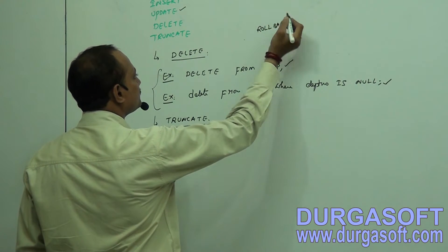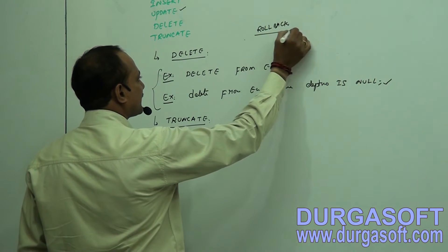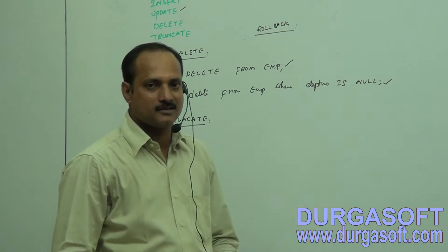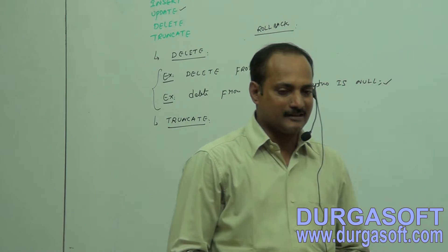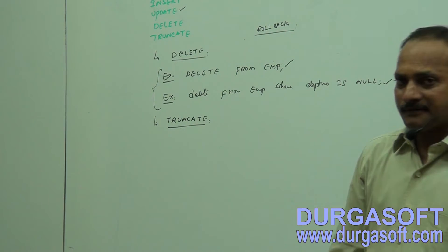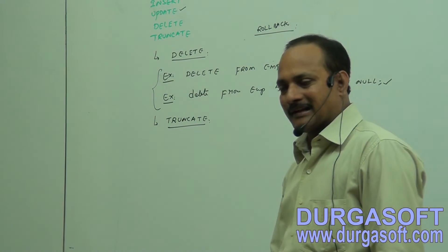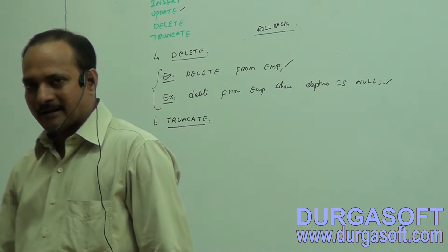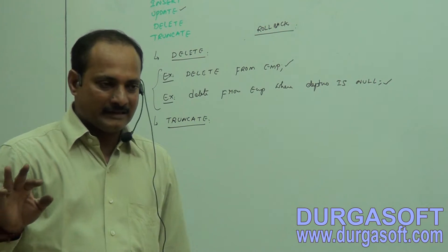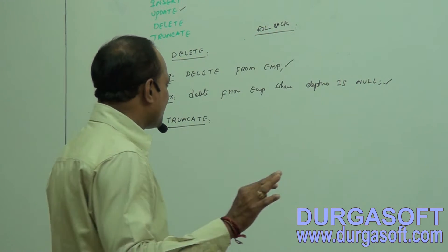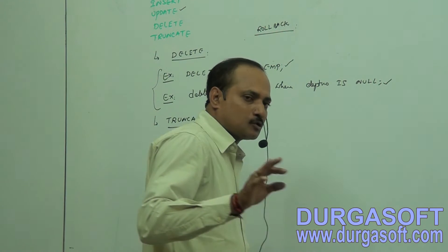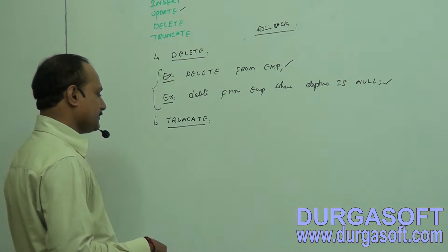Remember this: you can cancel a DELETE, UPDATE, or INSERT operation in the current session by using ROLLBACK. You need to apply ROLLBACK before executing the COMMIT command. Once an action is committed, you cannot roll back that action.